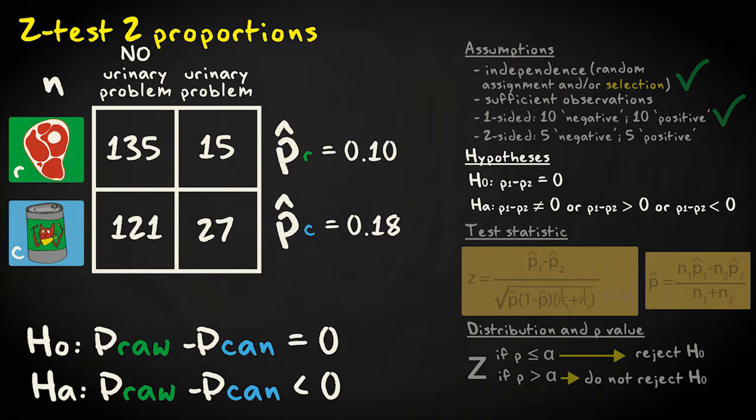The null hypothesis states that the difference in proportions will be zero. My one-sided alternative hypothesis is that the difference will be smaller than zero if I subtract the canned proportion from the raw proportion. Before I calculate the test statistic and determine the p-value, we'll set the significance level to 0.05.